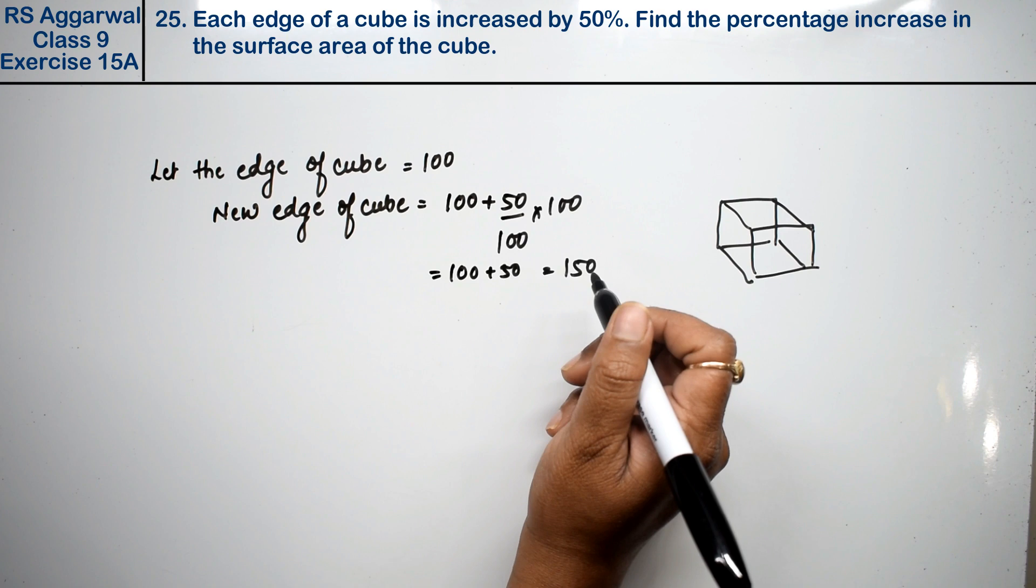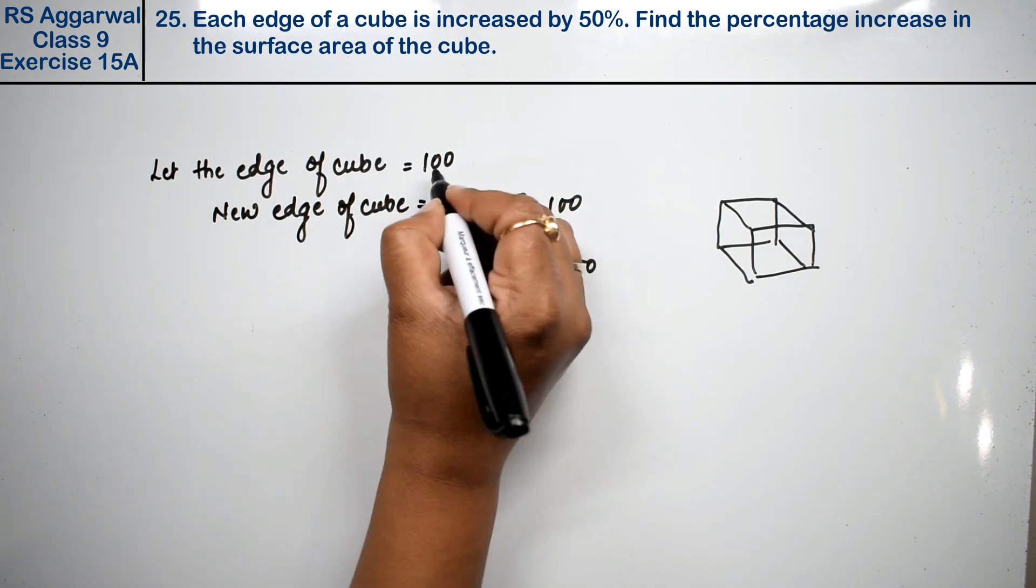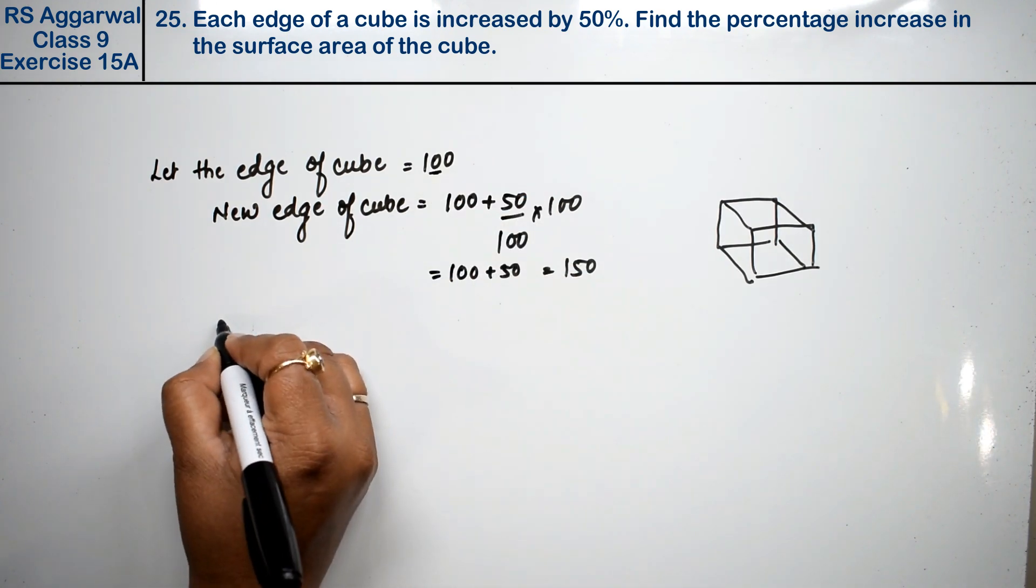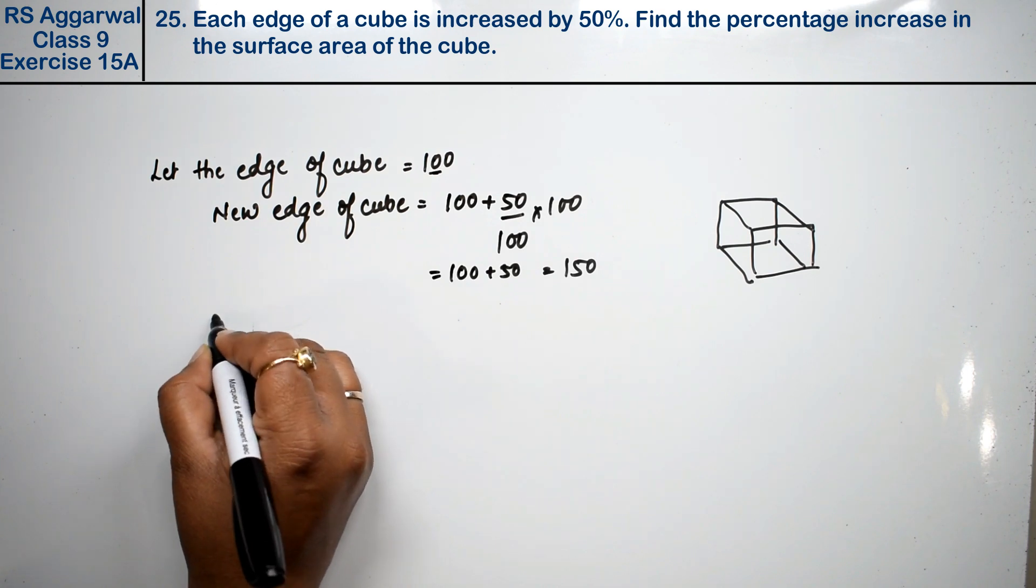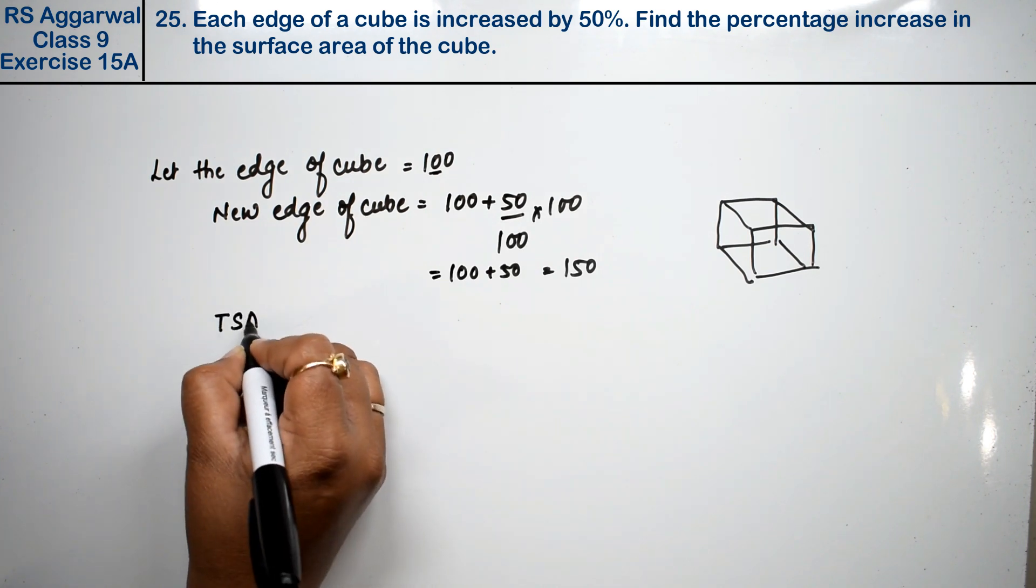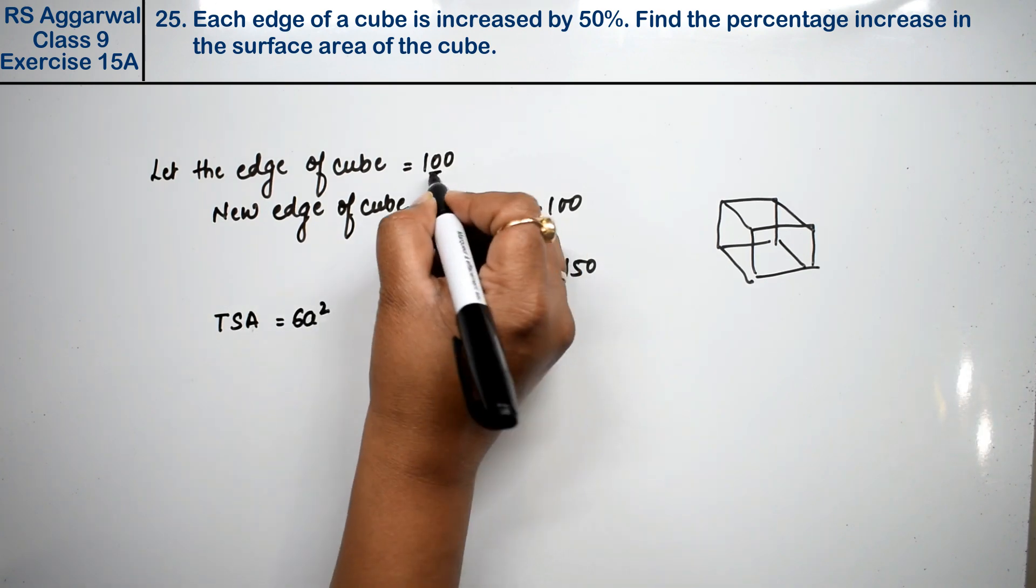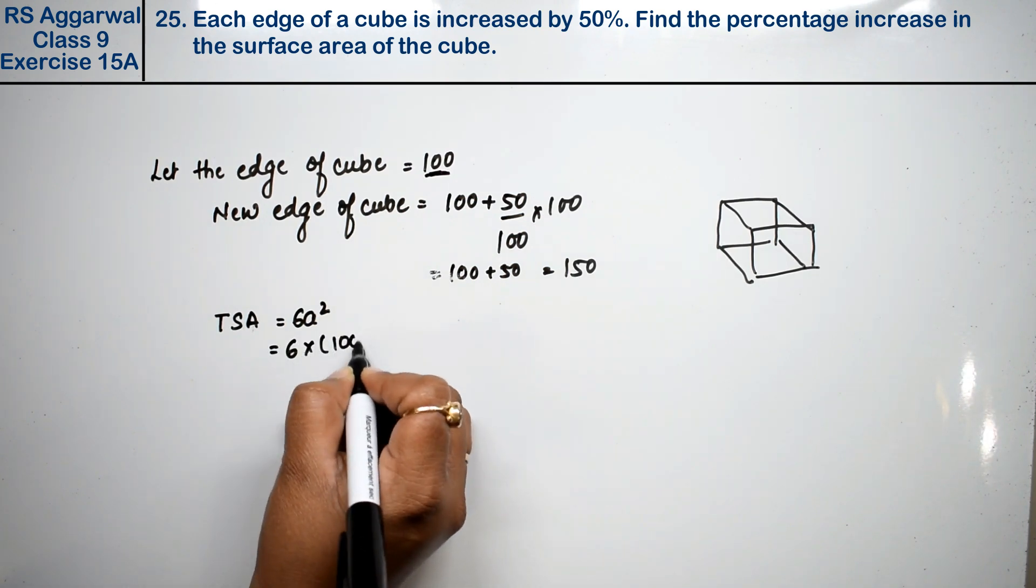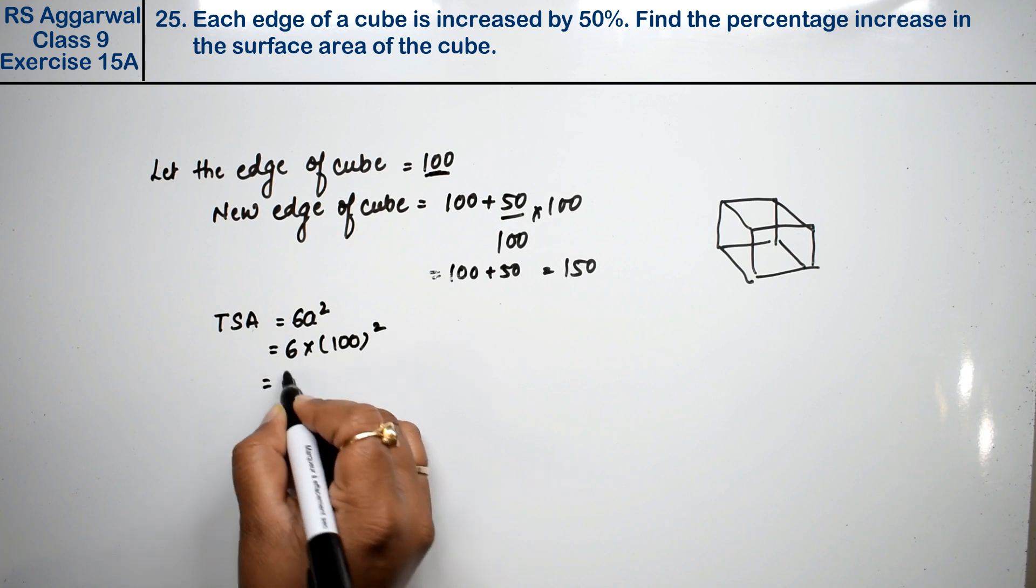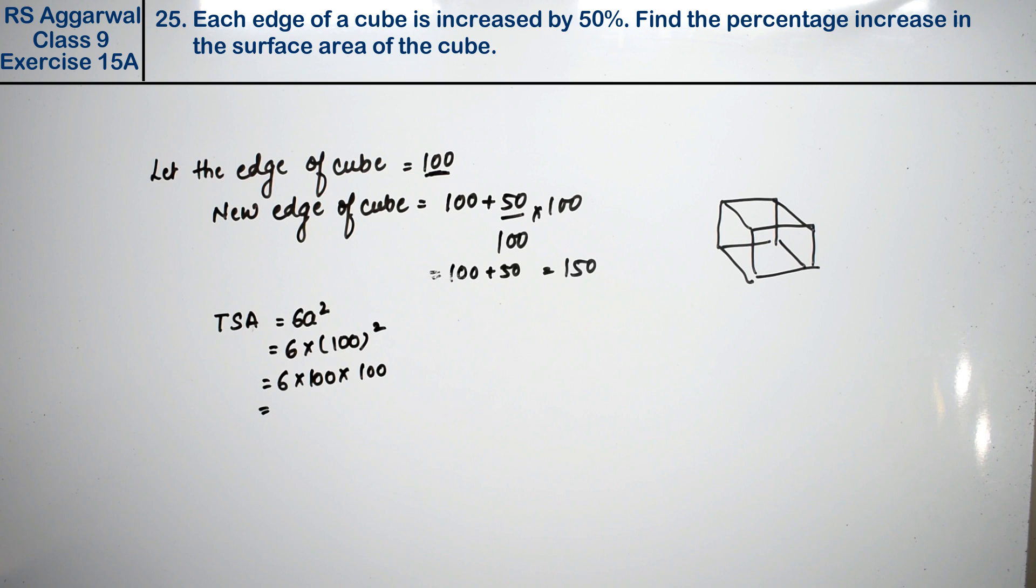Now he says find the percentage increase in the surface area of the cube. So we will take the surface area of the cube. We will take the total surface area of the cube, which is the formula 6a². Here a is 100. So here is 6 into 100 square, 6 into 100 into 100, that is 60,000.